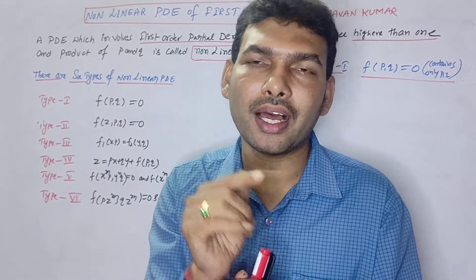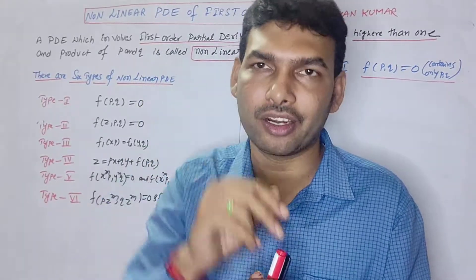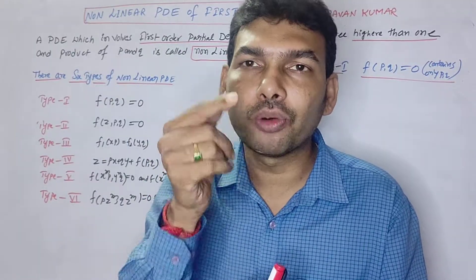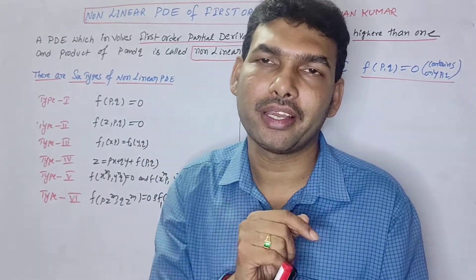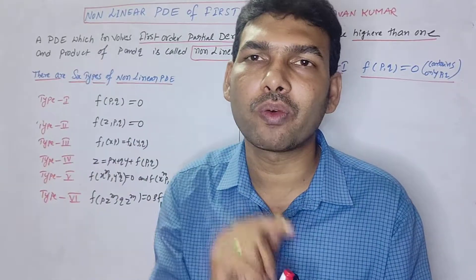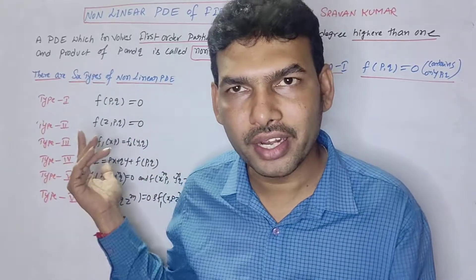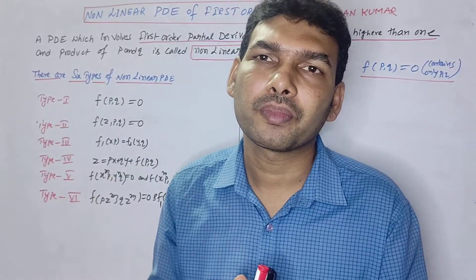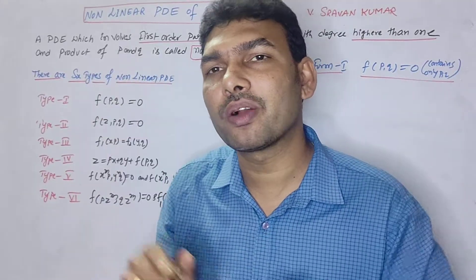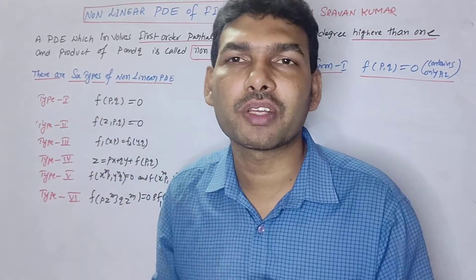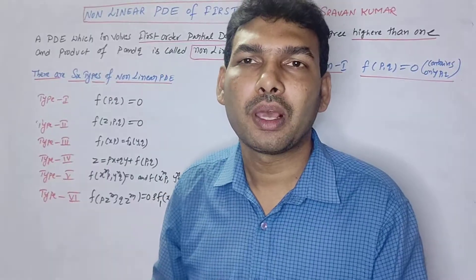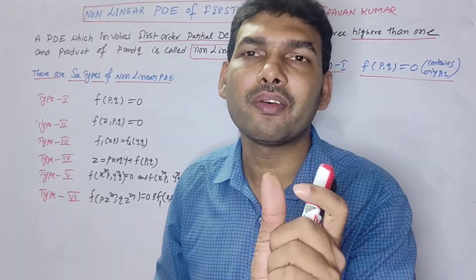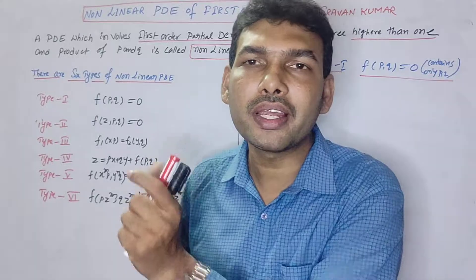PQ can be of second degree: P squared, Q squared, or P cubed, Q cubed. For example: P squared plus Q squared equal to 1 is non-linear. P into Q equal to 1 is non-linear. P squared x plus Q squared y equal to x squared plus y squared is non-linear. Any equation with P squared, Q squared, or a PQ product is a non-linear PDE.